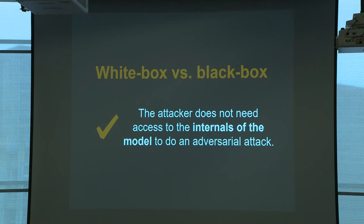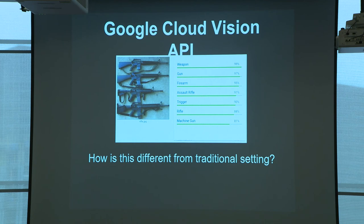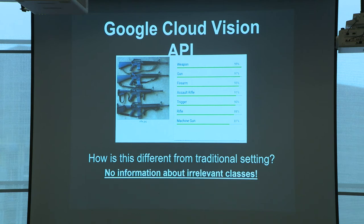The attacker does not need access to the internals of the model to do an adversarial attack. The next question: what if the attacker doesn't have access to all the predictions of the network? In the case of the Google Cloud Vision API, they might only give you the top K classes. This means we can't directly optimize for a target class because we don't have its probability, making targeted attacks problematic.